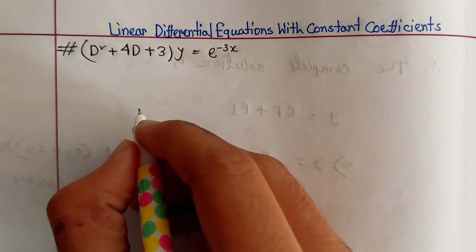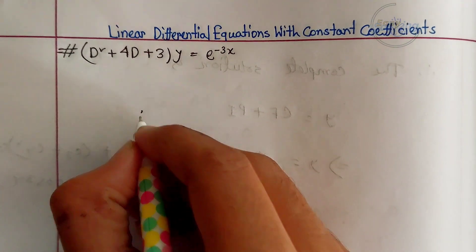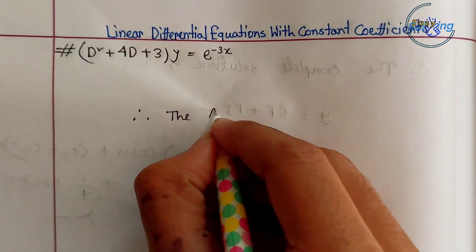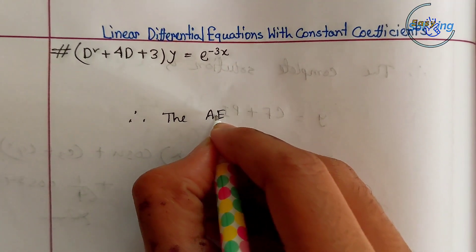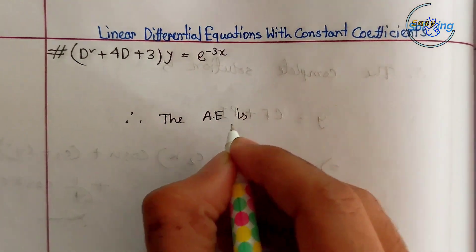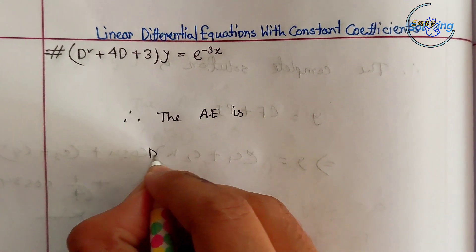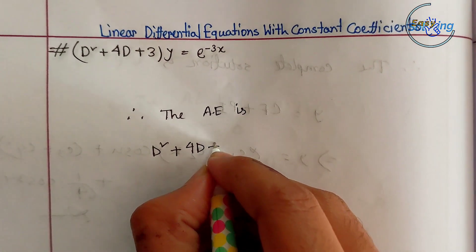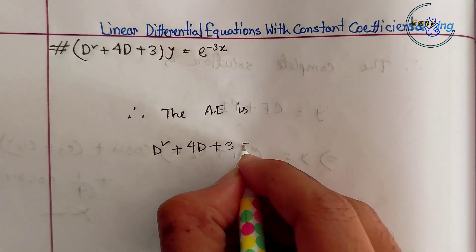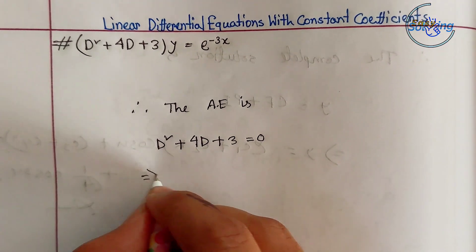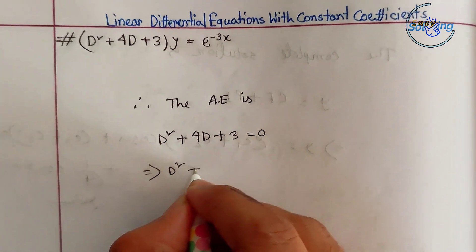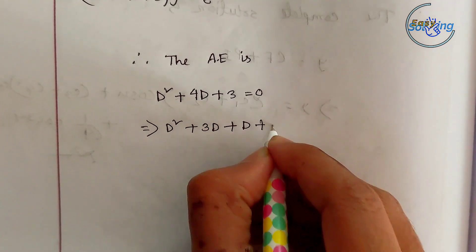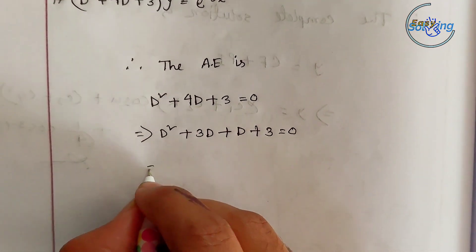This is a linear differential equation with constant coefficients. This is the auxiliary equation: D squared plus 4D plus 3 equals zero. We split the middle term: D squared plus 3D plus D plus 3 equals zero.